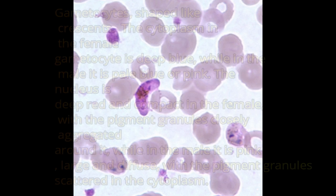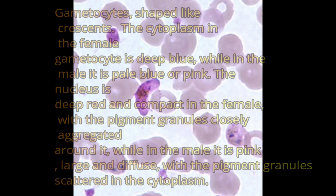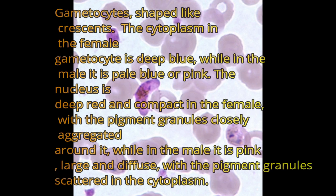Gametocytes are shaped like crescents. The cytoplasm in the female gametocyte is deep blue, while in the male it is pale blue or pink. The nucleus is deep red and compact in the female, with the pigment granules closely aggregated around it. While in the male it is pink, large and diffuse, with the pigment granules scattered in the cytoplasm.